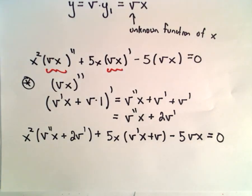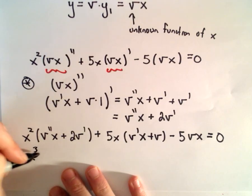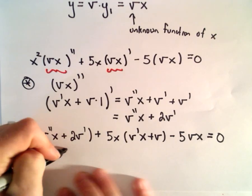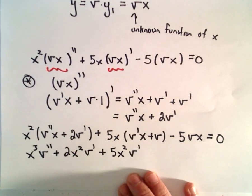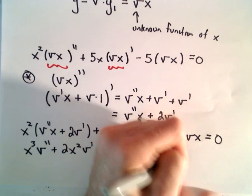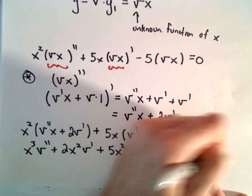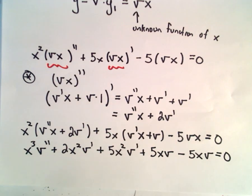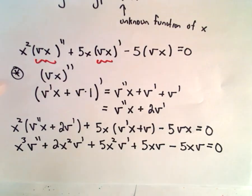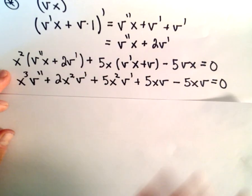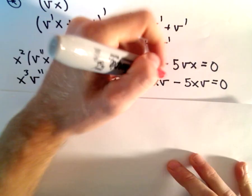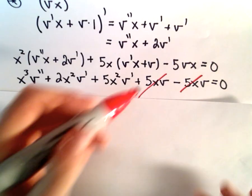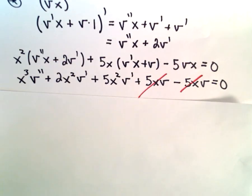Now I'm going to multiply this out and regroup. Distributing, we'll have x cubed times v double prime, plus 2x squared times v prime, then 5x squared times v prime plus 5xv, and then minus 5xv equals 0. What should happen in reduction of order is that all terms involving only v cancel out. Notice that's exactly what happens: we have positive 5xv minus 5xv, so those terms are simply gone.